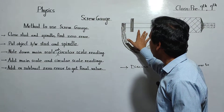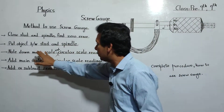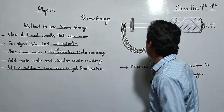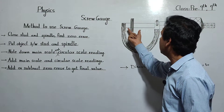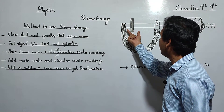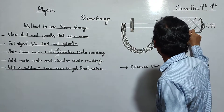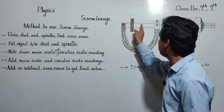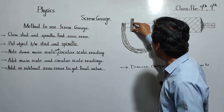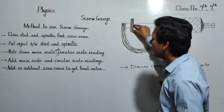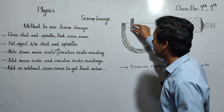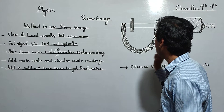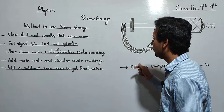Next step: put the object between the stud and spindle. We separate the stud and spindle by rotating the thimble to make some space, then place the object whose diameter or radius we want to find. The object is placed here, and then we tighten the stud and spindle around it.